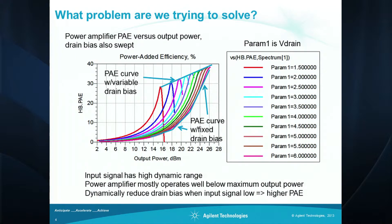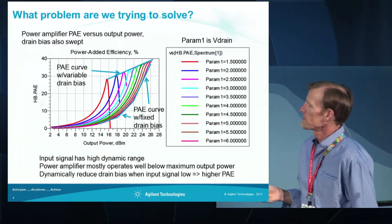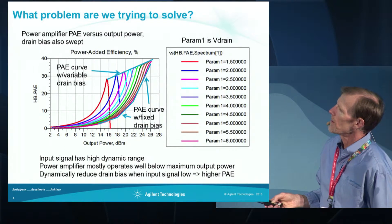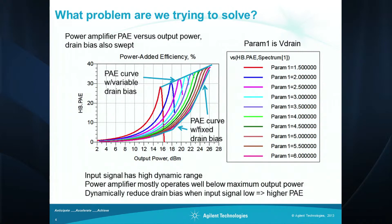This is a plot of the power added efficiency curve versus power delivered for a power amplifier with the drain bias swept as a parameter — swept from 1.5 up to 6 volts. What this indicates is that if we have a fixed drain bias, if we could instead adjust the drain bias to lower levels as the input signal power level is lower, then we can operate along the higher curve and get higher power added efficiency.